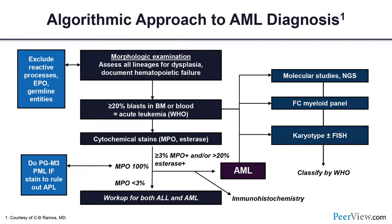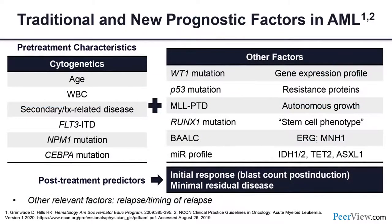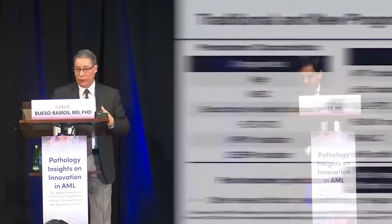These are some of the traditional and new prognostic factors in AML. Importantly, we are seeing differentiation effects on blasts in the presence of FLT3 or IDH treatment, making blast counting challenging from a morphology standpoint — this is an evolving need. I will ask Dr. Daver to comment on blast count from a clinical perspective.